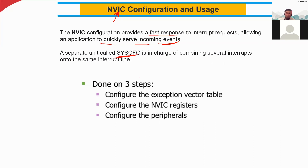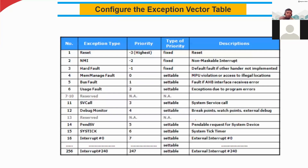It is straightforward and done in three steps: configure the exception in the vector table, configure the NVIC registers, and configure the peripherals. When you do the programming, you will configure the registers and peripherals. This is an example exception vector table.